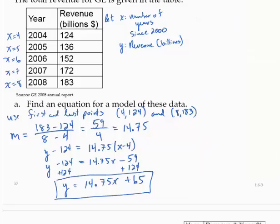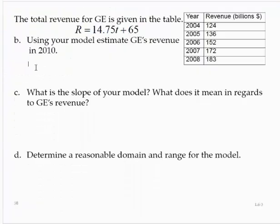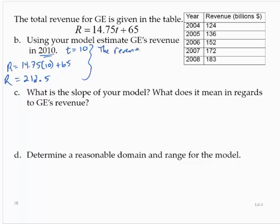Moving on, using your model, estimate GE's revenue in 2010. So 2010 means that t equals 10 from our model. So we would have r then equals 14.75 times 10 plus 65. And following the order of operations, and using a calculator, we get 212.5. So our conclusion there is the revenue in 2010 was approximately $212.5 billion.